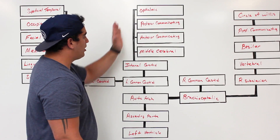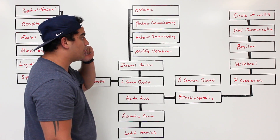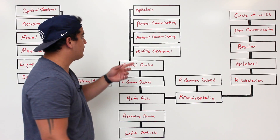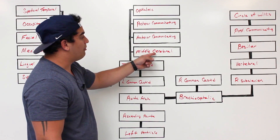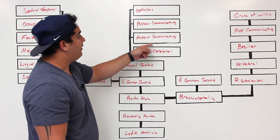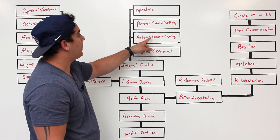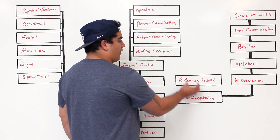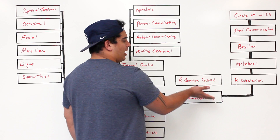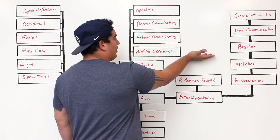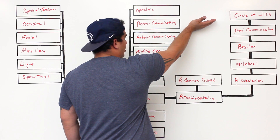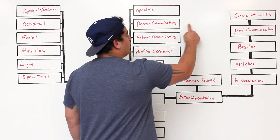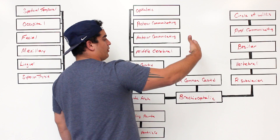The internal carotid moves more internally, giving off the ophthalmic branch supplying the eye — including the central retinal artery, ciliary arteries, lacrimal branches, and anterior ethmoidal branches. It also gives off the middle cerebral artery supplying the temporal and parietal lobes, an anterior communicating branch, and a posterior communicating branch. The brachiocephalic gives off the right common carotid and right subclavian, which mirror the left side with the same branches including middle cerebral, anterior and posterior communicating. When anterior communicating branches meet, they form the anterior cerebral arteries; when posterior communicating branches meet, they form the posterior cerebral arteries.